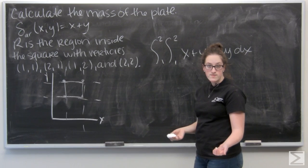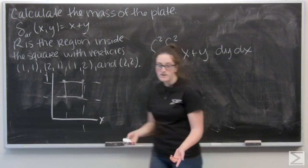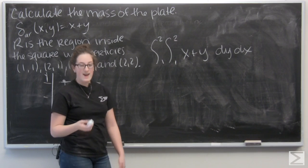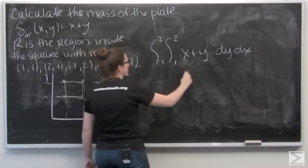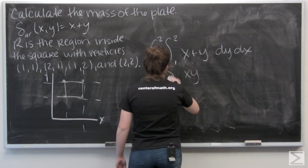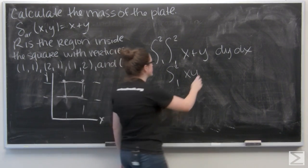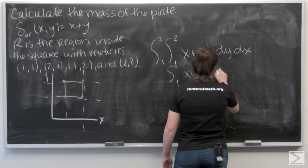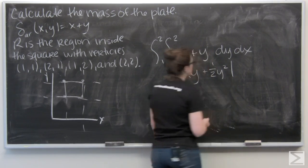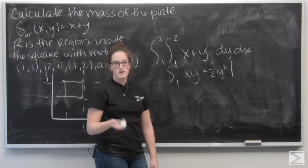So let's start. We're integrating with respect to y. So x just acts like a constant. So I'm going to get xy when I integrate, and y becomes one-half y squared. And then I want to evaluate that from y equals 1 to y equals 2.